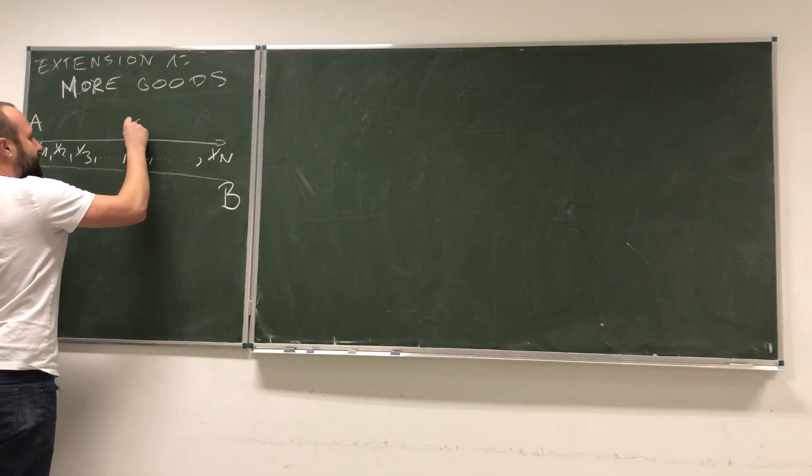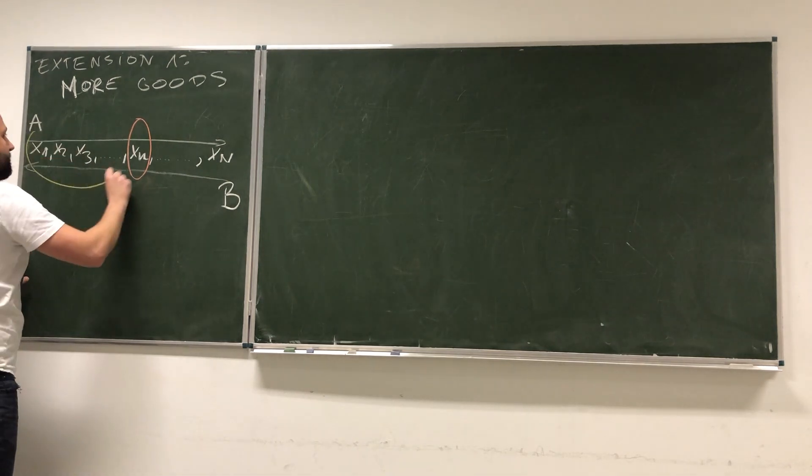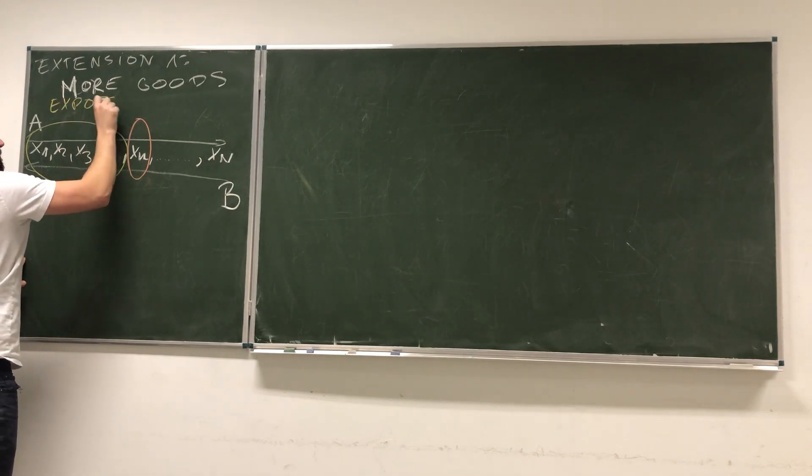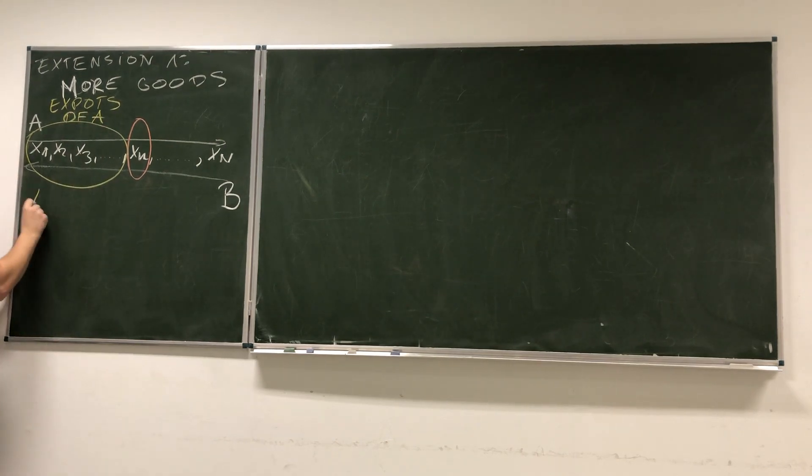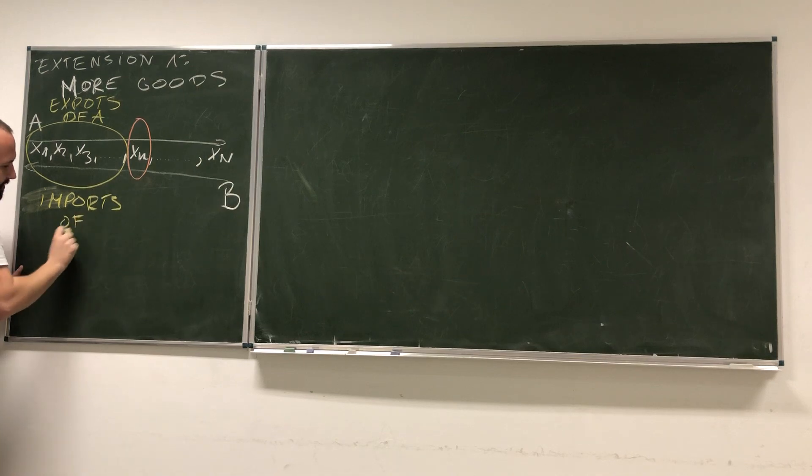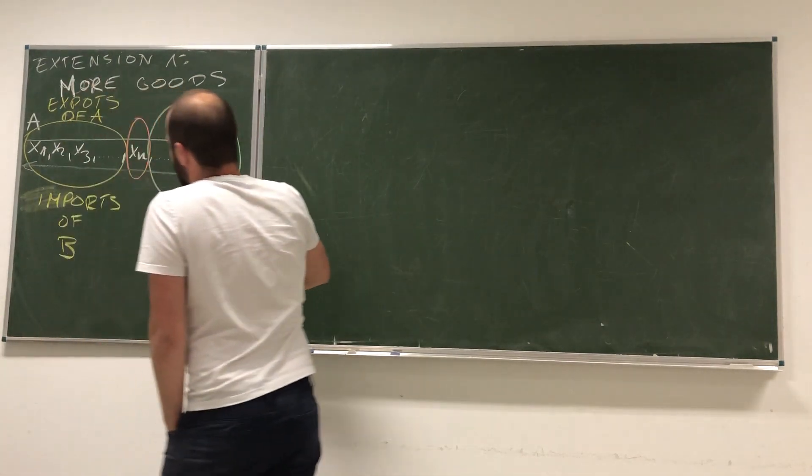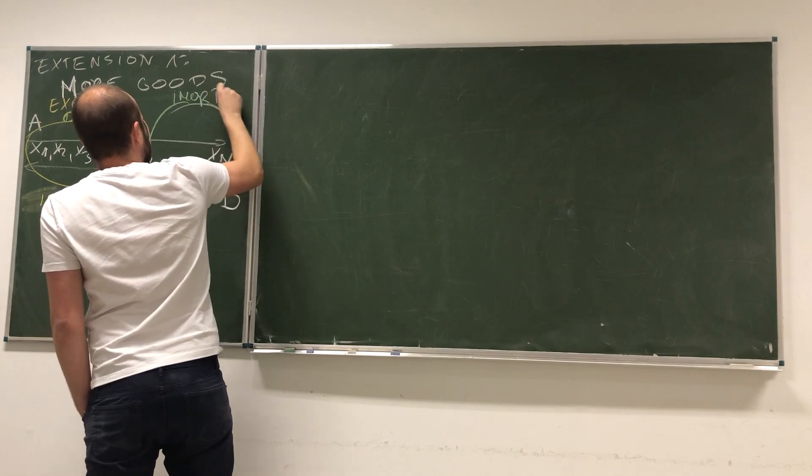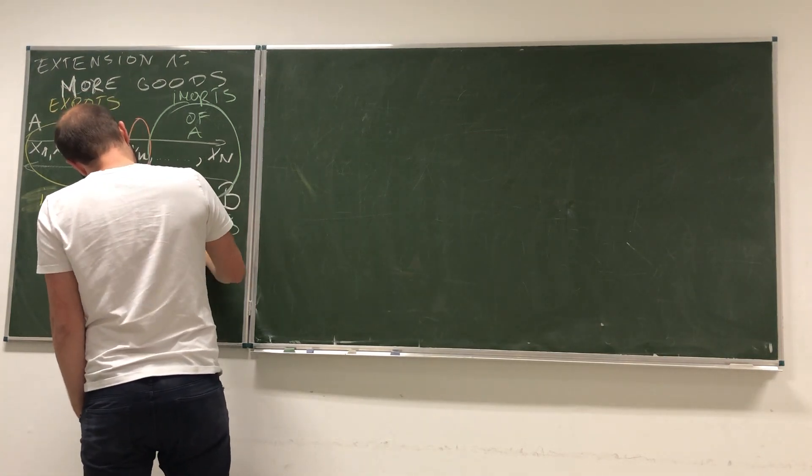In this setting, what I can do is find some good, a line of discontinuity, good XM, that will divide those into two groups. Those groups will be exports of country A, or imports of B. Similarly, here we will see imports of A or exports of B.